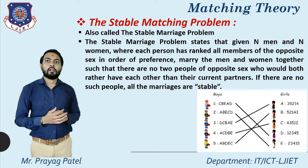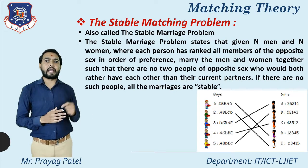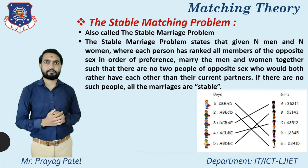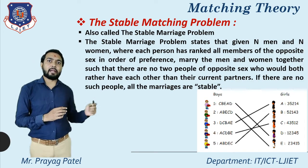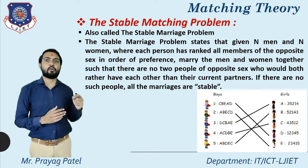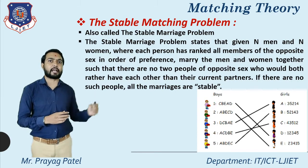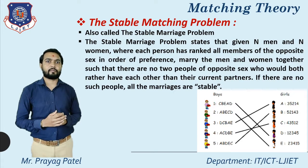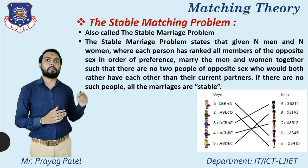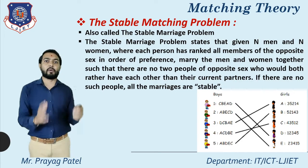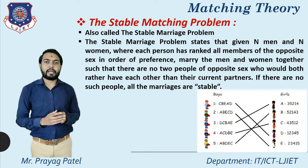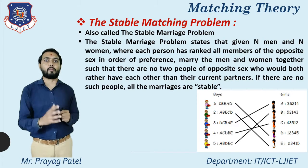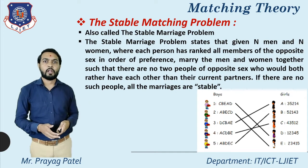The stable marriage problem states: given N men and N women where each person has ranked all members of the opposite sex in order of preference, marry the men and women together such that there are no two people of opposite sex who would both rather have each other than their current partners. If there are no such people, all marriages are stable.